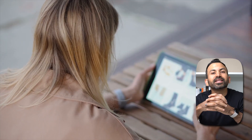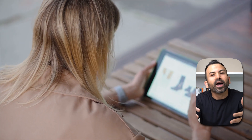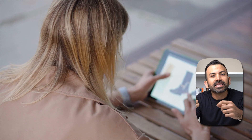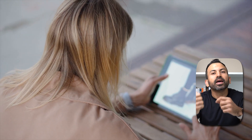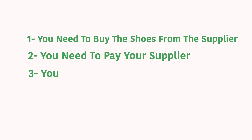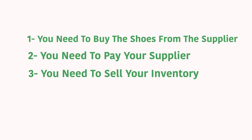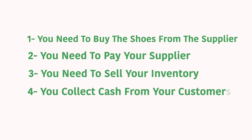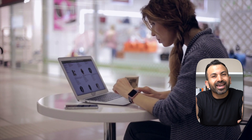Let's look at a typical e-commerce business. Let's say you're a shoe retailer online. There are four key events that need to happen. Number one, you need to buy the shoes from a supplier. Number two, you need to pay your supplier. Number three, you need to sell your inventory. And number four, you collect cash from your customers.